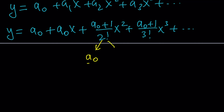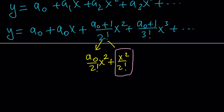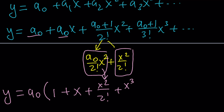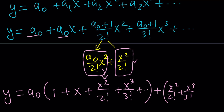Separating the expression: a sub 0 divided by 2 factorial times x squared, plus x squared over 2 factorial, and so on. All terms have a factor of a sub 0, so I factor it out. That gives a sub 0 times (1 plus x plus x squared over 2 factorial plus x cubed over 3 factorial plus ...), plus the remaining terms (x squared over 2 factorial plus x cubed over 3 factorial plus ...). Forgive me for skipping a step — hopefully you can follow along.